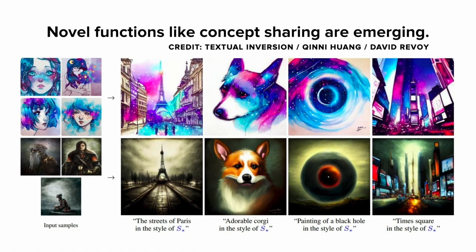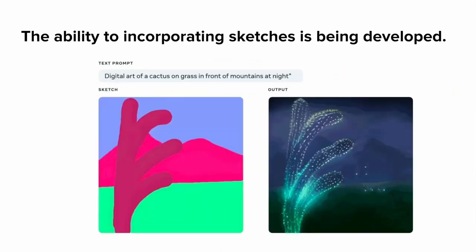Meta's Make a Scene allows you to pass in a text prompt alongside a napkin sketch of what you want. For example, with the prompt 'a digital art of a cactus on grass in front of mountains at night' and a rough colored sketch, the final output is really guided by both. This is in the spirit of our previous image prompting work.